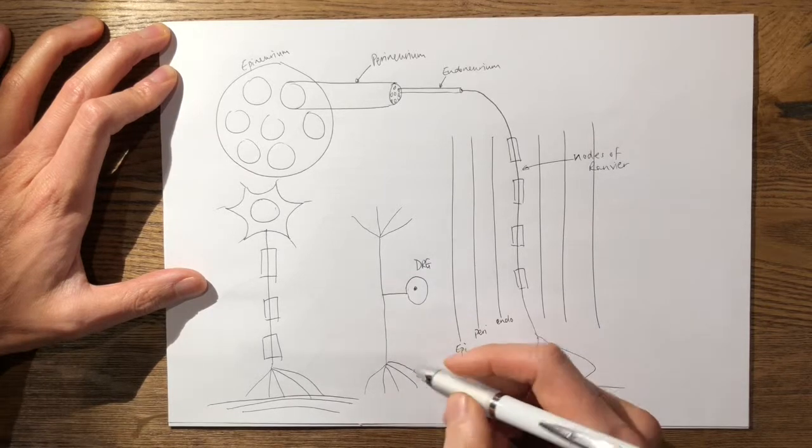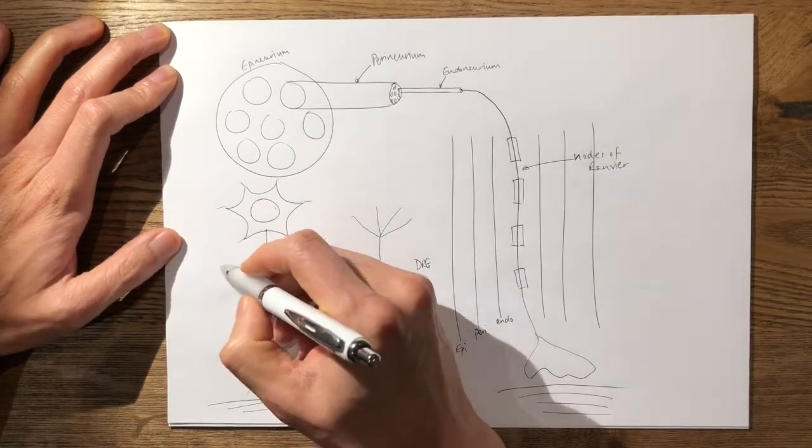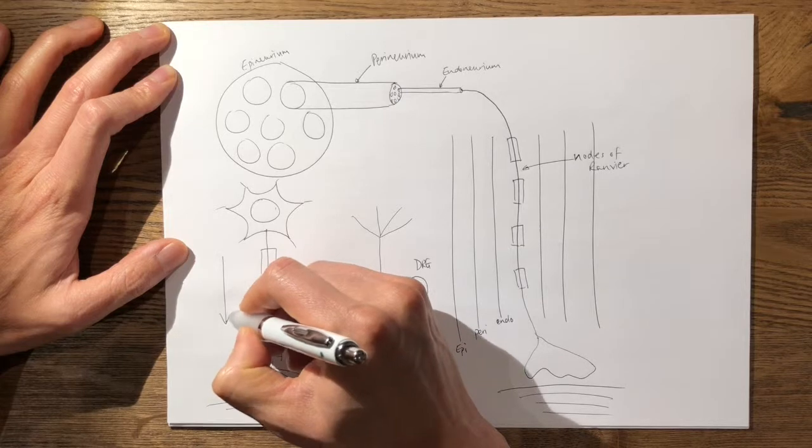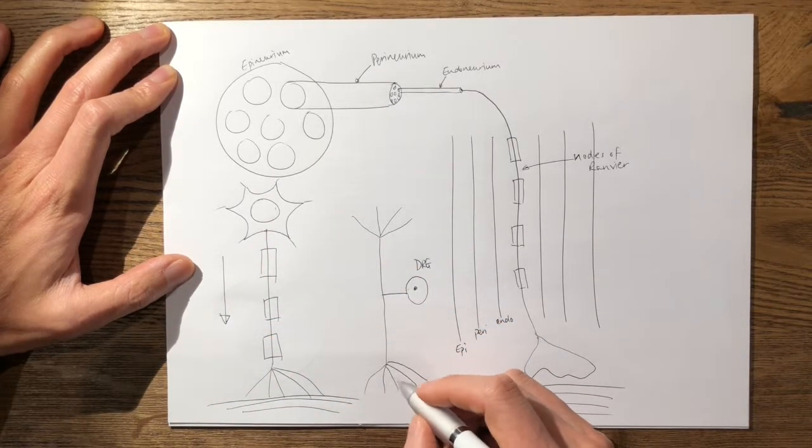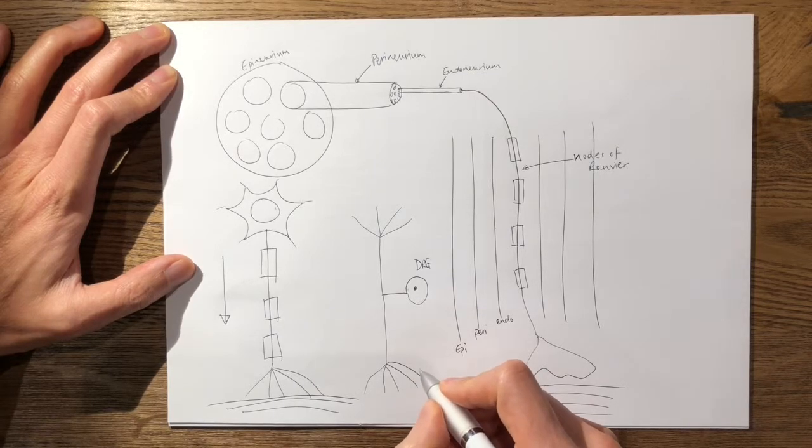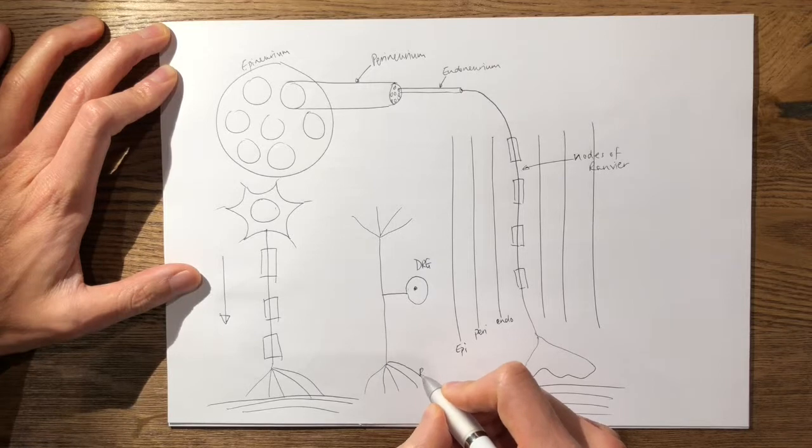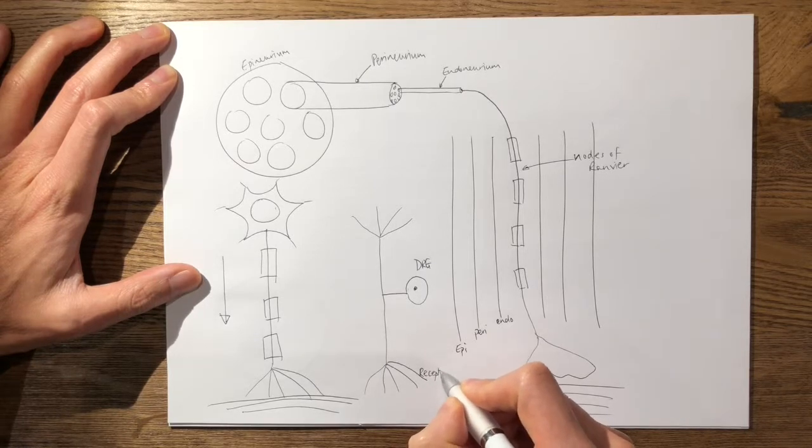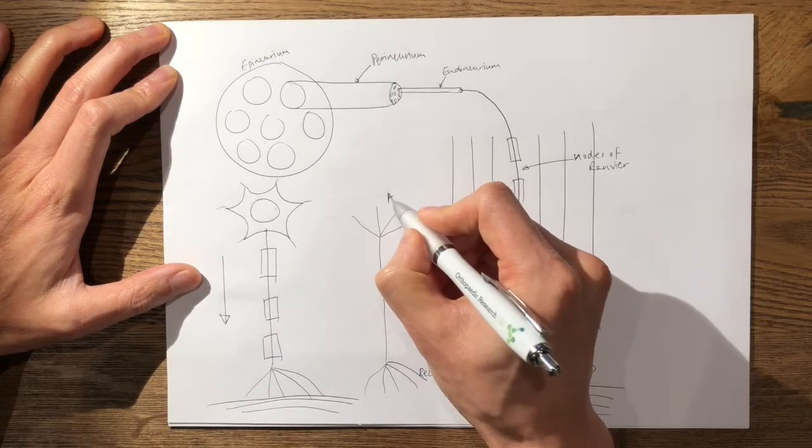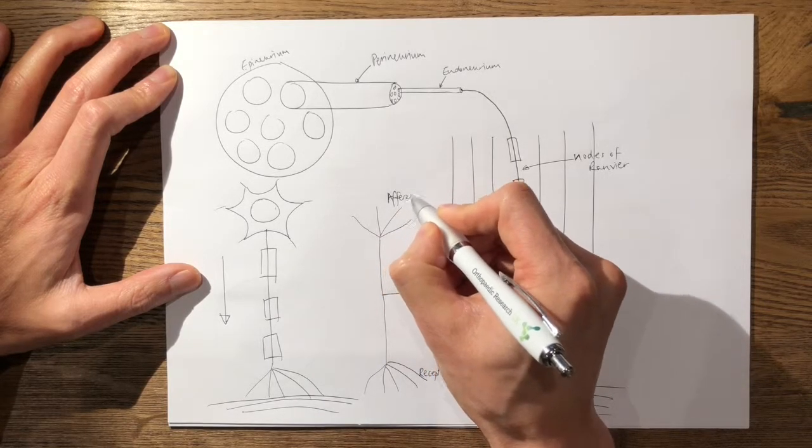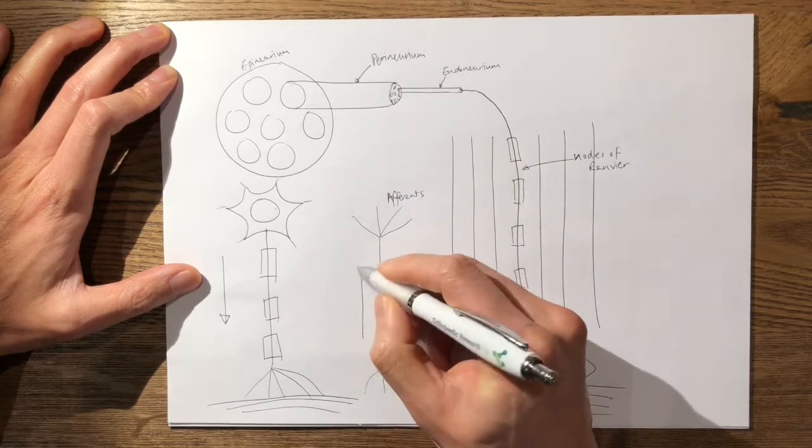So typically in the motor cell, your impulse travels this way from the cell down to the muscle. However, from this side, if these are your receptors or your sensory receptors, and these are your afferents, your impulse typically travels this way.